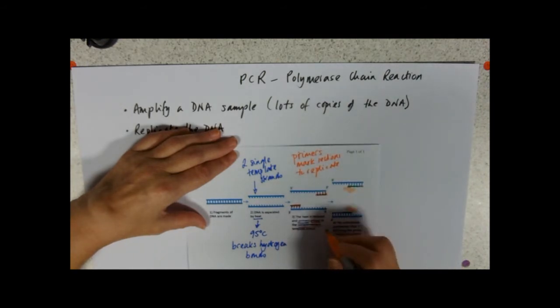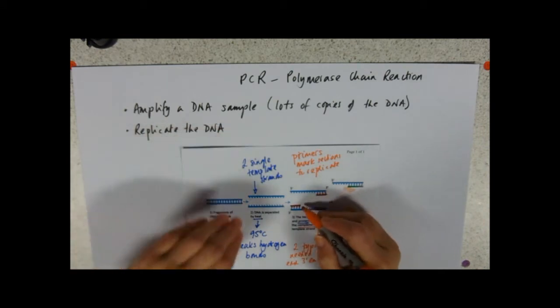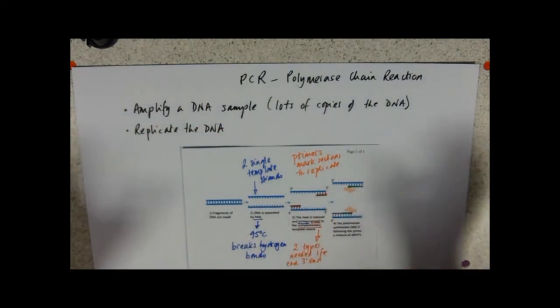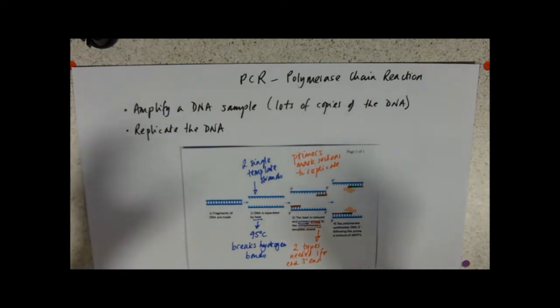So again, it's by complementary base pairing. And you need to bear in mind that two types are needed. One for each three prime end. And of course, these will have different base sequences. So you wouldn't expect it to start and stop with a little bookend of the same base sequence. So you need two different primers because the base sequences at each end of the DNA are different.